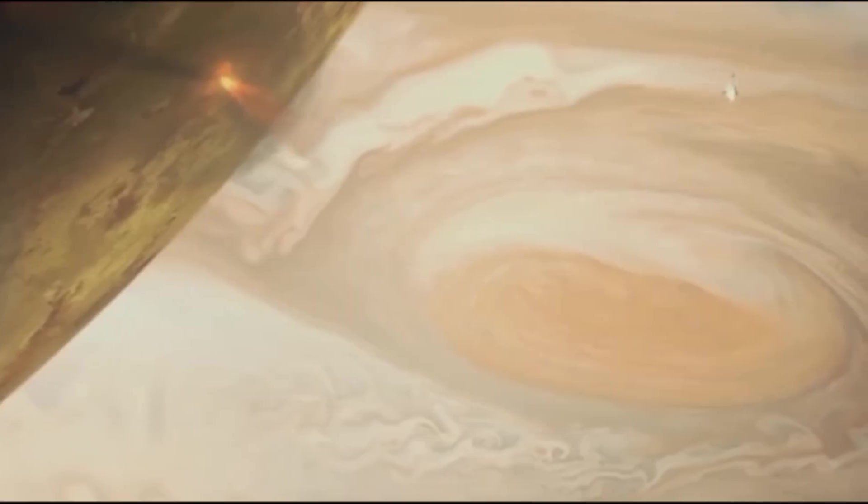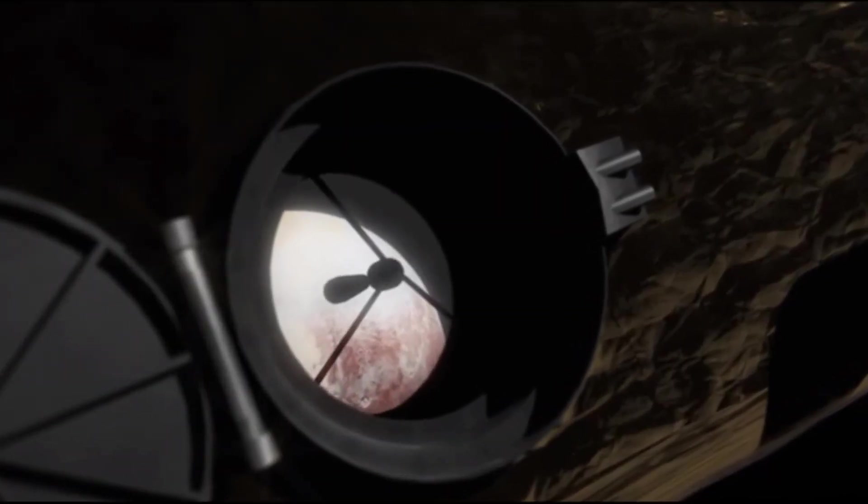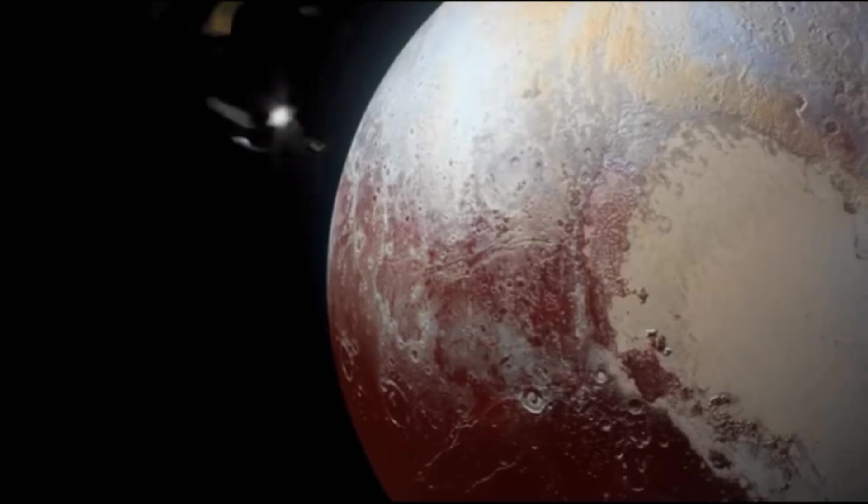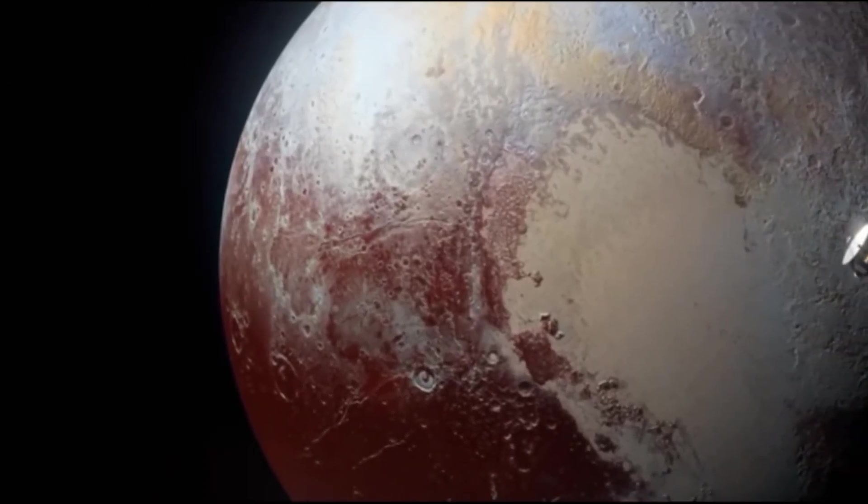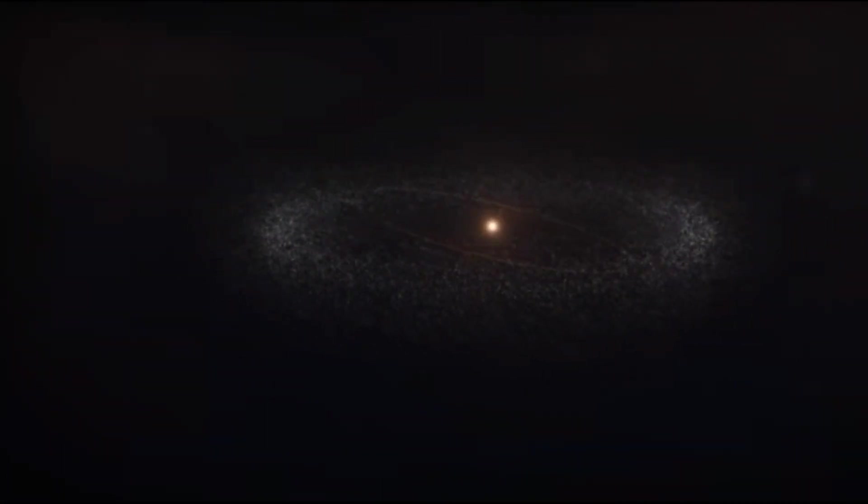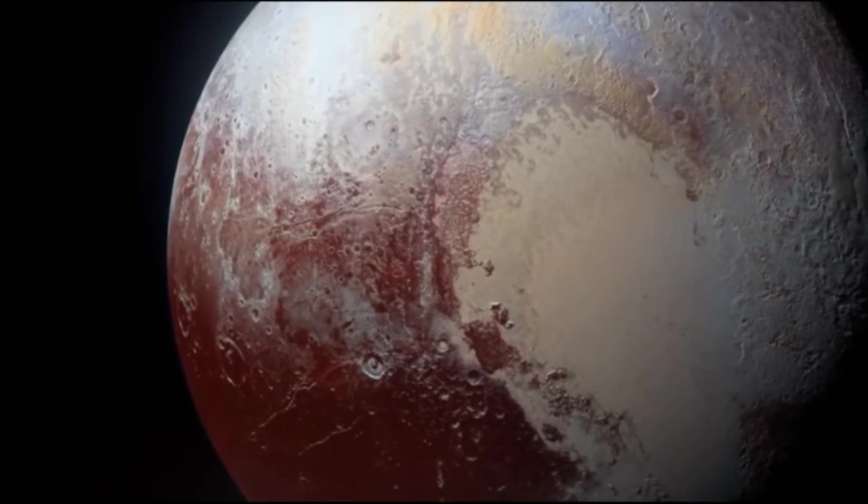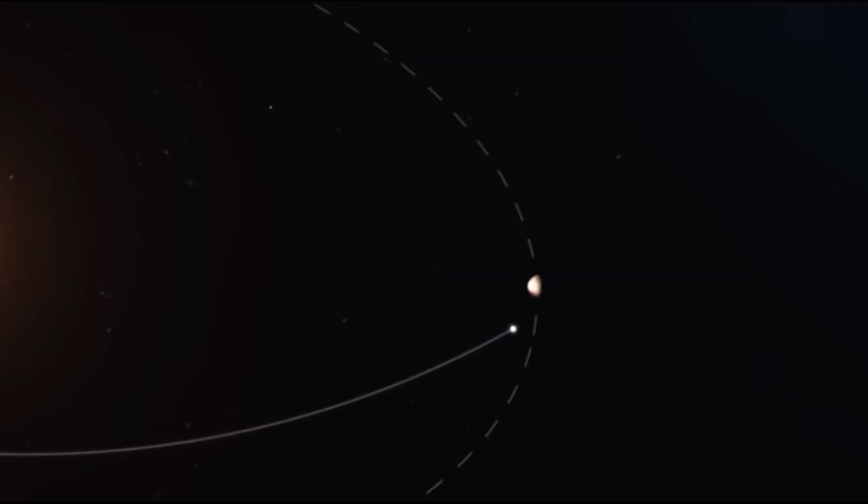But why is the planet not considered a full-fledged one? After its discovery in 1930 and until 2006, Pluto was considered the ninth full-fledged planet of the solar system. But everything changed in 1992 when objects similar in size to Pluto began to be discovered in the Kuiper Belt. This raised questions among scientists.